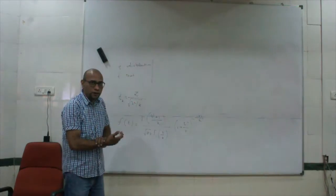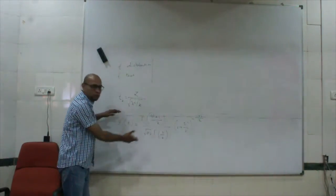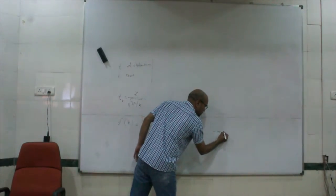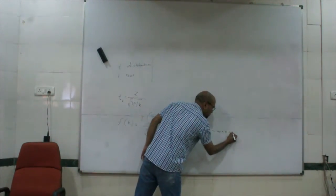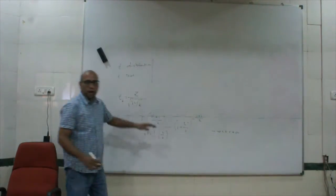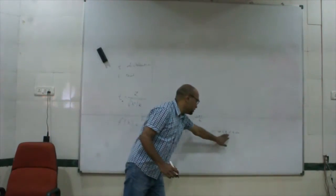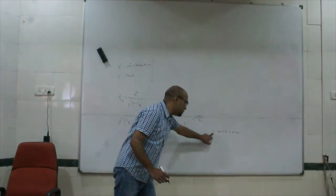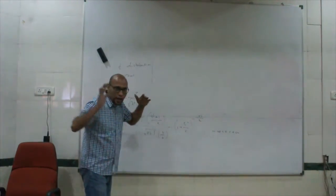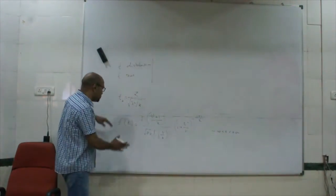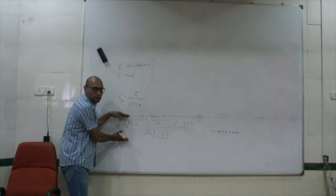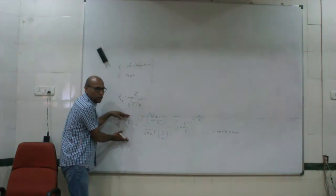Obviously t is a continuous random variable, so t will follow this distribution. For t, negative infinity is smaller than t is smaller than positive infinity — t would take any value between negative infinity to positive infinity. And the area under the distribution is computed by this function.